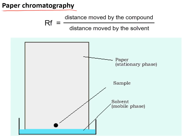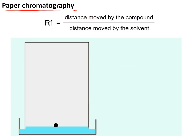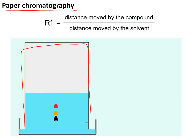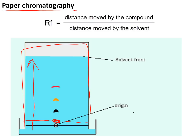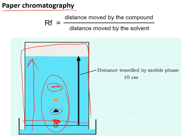Paper chromatography is used to separate liquids on a small scale. You start with a stationary phase, normally a piece of chromatography paper. You draw a pencil line on that paper and place a spot of your sample on it. You put the chromatography paper in some solvent and the solvent soaks up the paper, separating out the different substances in the sample. The most soluble ones go furthest, the least soluble ones go least far. You can calculate RF, which is the distance moved by the compound divided by the distance moved by the solvent.